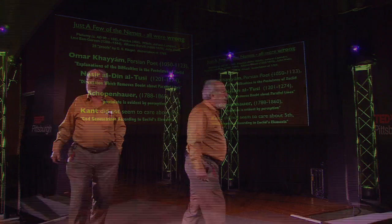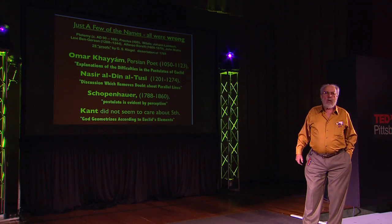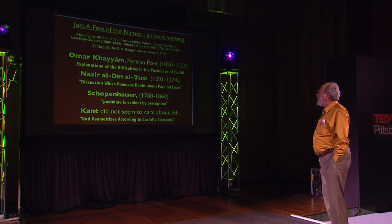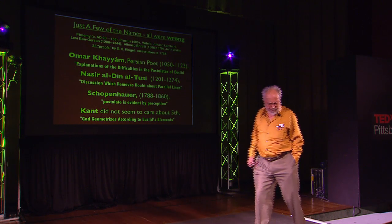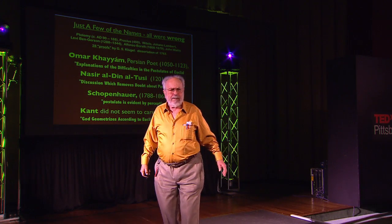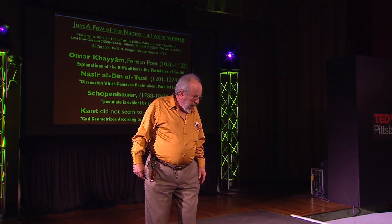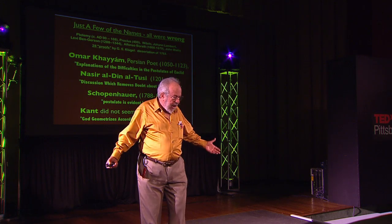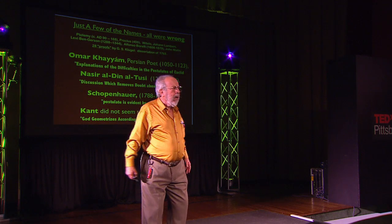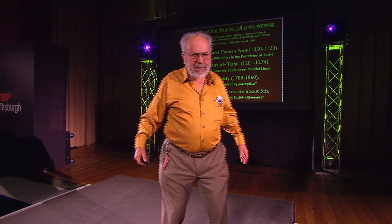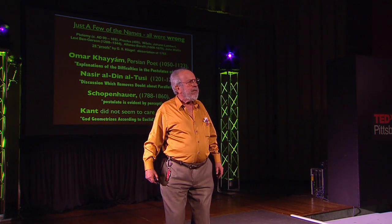Khayyam never said it explicitly — he showed all the previous proofs were wrong and just avoided a serious discussion of it. But he did a lot of influential work, and his follower Tussi wrote a book called Discussion Which Removes Doubt About Parallel Lines. Then we have the slightly sad story of the great philosopher Schopenhauer, who did not seem to understand the nature of a logical system. He actually said the postulate is evident by perception — missing the whole point. And then the great Kant thought that God geometrizes according to Euclid's Elements, and you didn't have to prove anything.